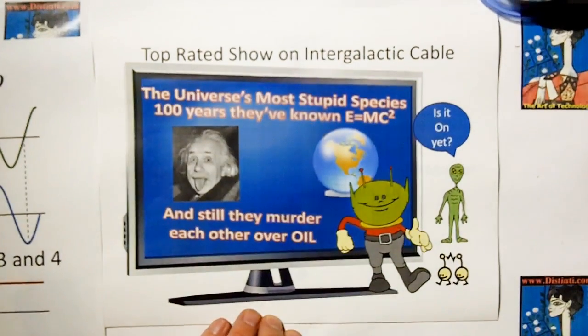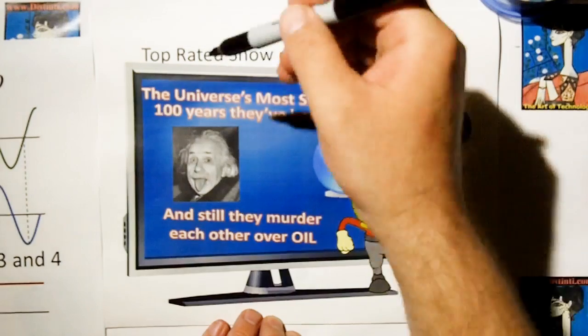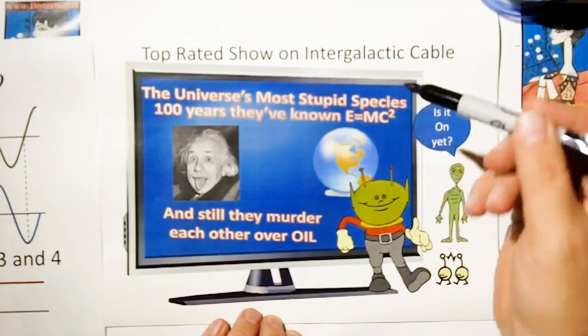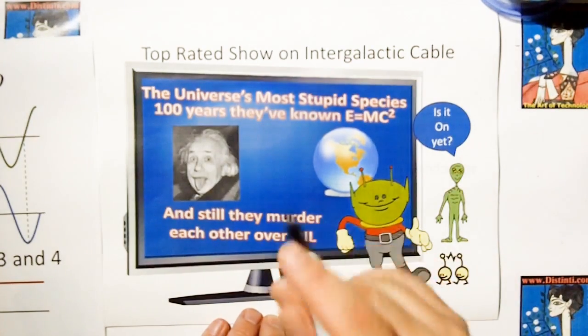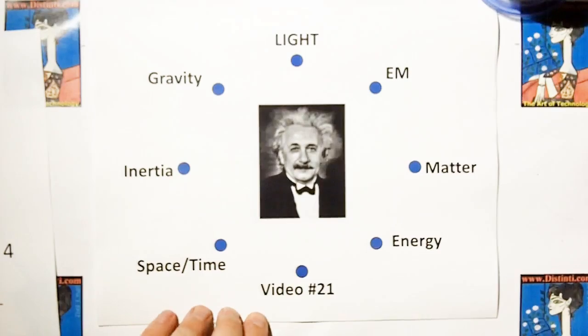We are so bad at physics on this planet that I'm sure the aliens are watching us and we are on the top rated show for the most stupid species. We've had a hundred years. We've known about E equals MC squared, but we're still murdering each other over oil. That's ridiculous.